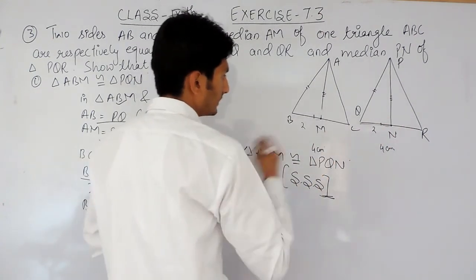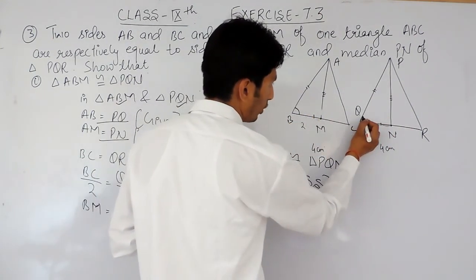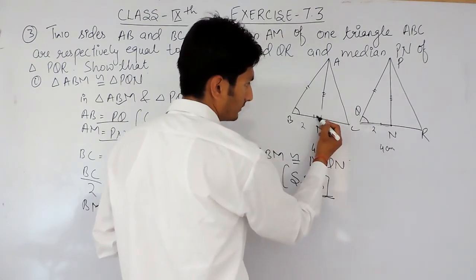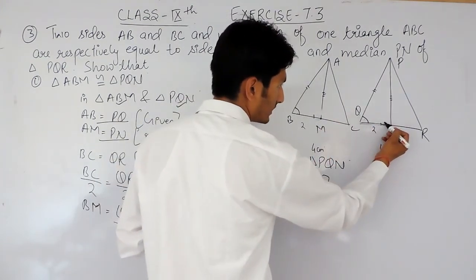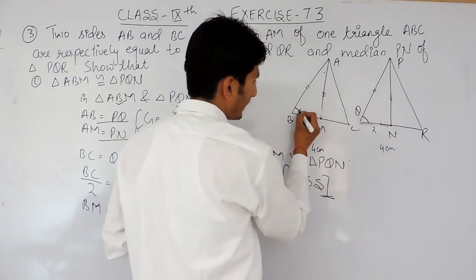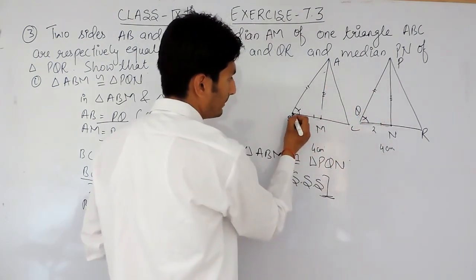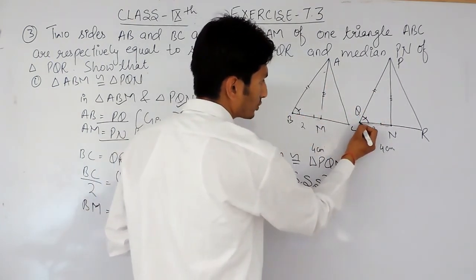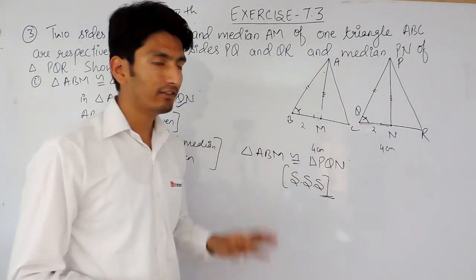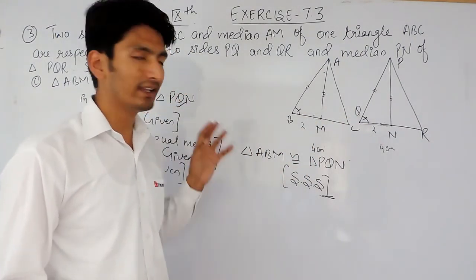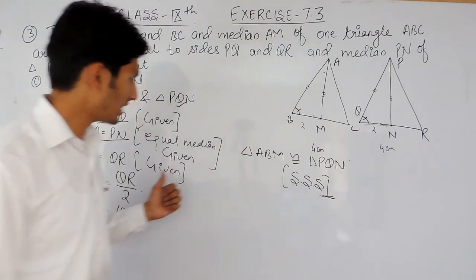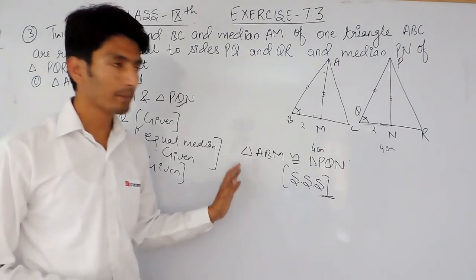Since we have proved that triangle ABM is congruent to triangle PQN and all three sides are equal, obviously all three corresponding angles will also be equal. This angle equals this angle, this equals this, and this equals this. So we have proved that angle B is equal to angle Q. This proof will be helpful in the next video, which covers the second part of the same question. This is how you solve the first part.